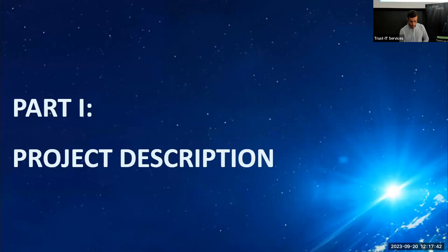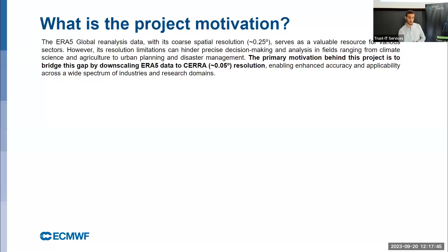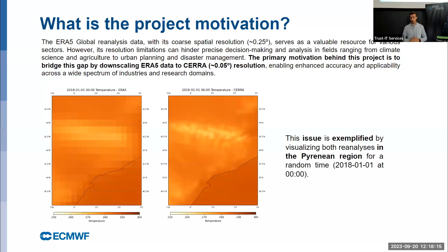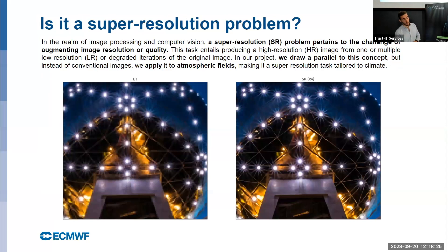Now I move to the project description. The goal is to get ERA5 data to CERA data. We use ERA5 because it is a product available in real time with a five-day delay. We target CERA as output because of its resolution — ERA is on the left and CERA is on the right, showing the border between Spain and France. The difference in resolution is clear. The key keyword here is super resolution: transforming a low-resolution image to a high-resolution image.